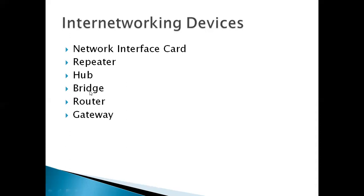The bridge works on the data link layer for connecting devices. The router is for connecting a network to the internet — with the help of a router, we can access the internet. All the data coming from outside the network passes through the router. The gateway is used for different protocols.